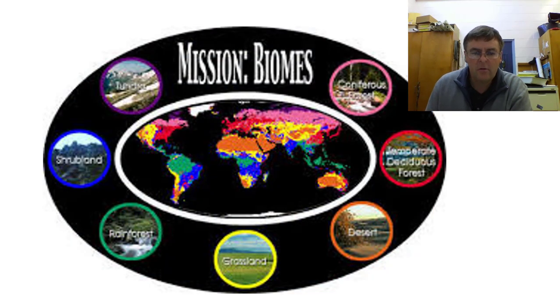Different biomes there. Sorry this has got a bit fuzzy when I blew it up. But different biomes or coniferous forests, deciduous forests, deserts, grasslands, rainforests. That's what we have here in New Zealand. Rainforest mostly. Tundra. Shrublands. Different biomes or types of life ecosystems around the planet.